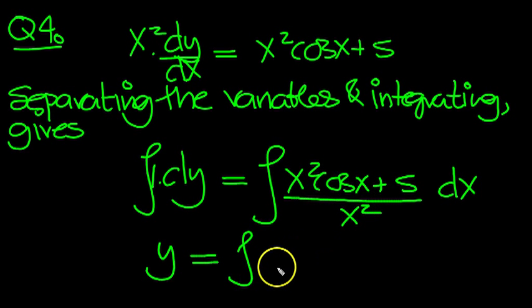So we can split this fraction up into the first part over that. And the x squareds will cancel there to leave cos x. Plus the second part over the denominator. So that's 5 over, so that's 5x to the minus 2, we can write it as dx.